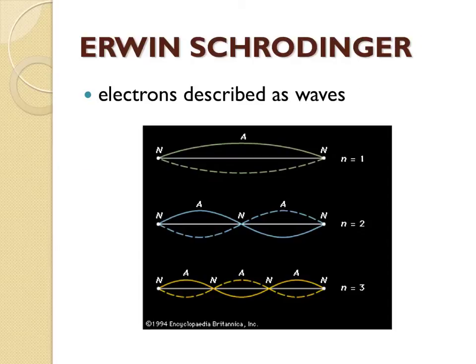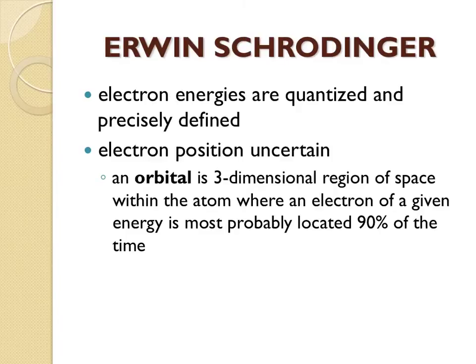Think about treating electrons as waves, like these standing waves. Only certain waves can be observed for the electron. In the quantum mechanical model of the atom, electron energies are still quantized, just like in the Bohr model, and they are precisely defined.